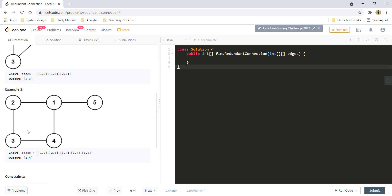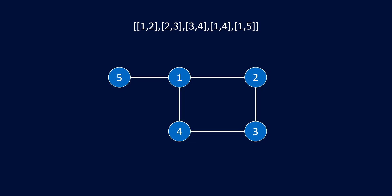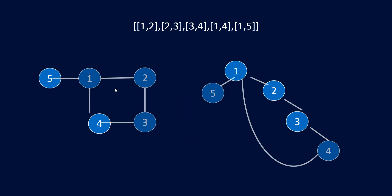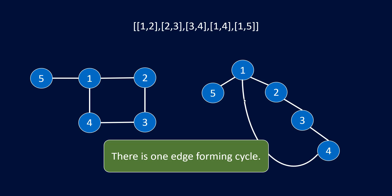Let's take example number two and see it more clearly. Here is the representation of the second example given to us. We have edges (1,2), (2,3), (3,4), (4,1), and (1,5). Now, what if this was a tree? It would have looked something like this, where there is one extra edge that is added, creating a cycle which converts this tree into the graph. If we delete that one edge, this is going to be a tree.